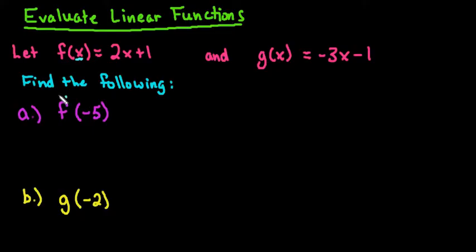The letter on the outside tells you which equation to look at. So since this says f(-5), that tells me to look at my f(x) equation and I'm going to replace all of my x values with -5. So instead of writing x, I'm just going to simply plug in -5 and then simplify my answer.